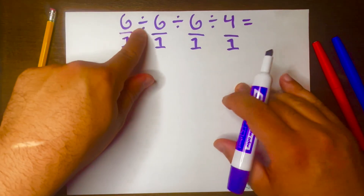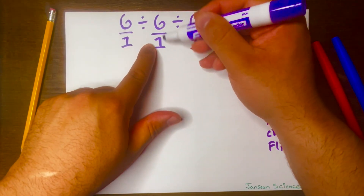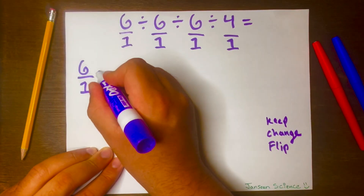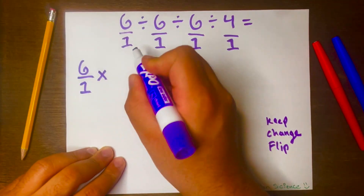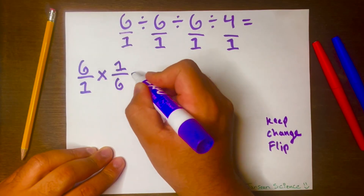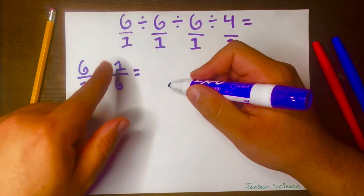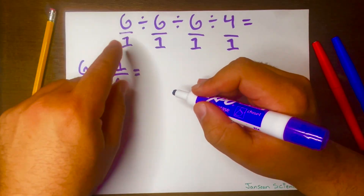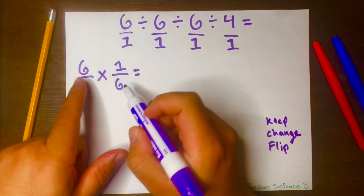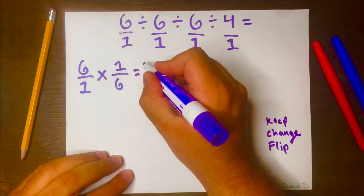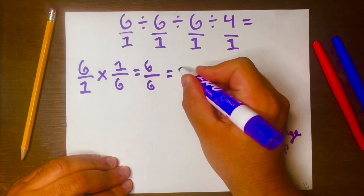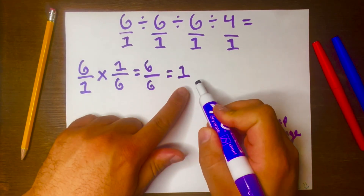We'll keep the first one, then change the operation, and then flip the second part. So it'll be 6 over 1 times — because we changed the operation from division to multiplication — and then we flip, so the 6 will go at the bottom and the 1 will go on top. We're working from left to right because all the operations are only division. Multiplying across: 6 times 1 is 6, and 1 times 6 is 6, so 6 divided by 6 is 1. We can write 1 as a fraction: 1 over 1.